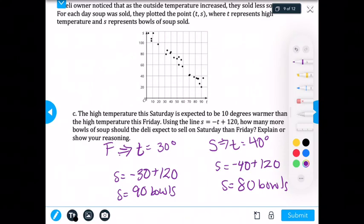Now guess what? How many more bowls of soup should the deli expect to sell on Saturday than on Friday? This is actually a little bit of a trick question because if we see on here, on Friday, they sold 90 bowls. On Saturday, they sold 80 bowls. So what day sold more bowls of soup? Right, Friday.